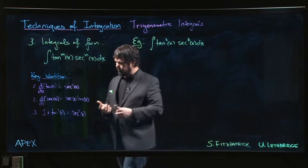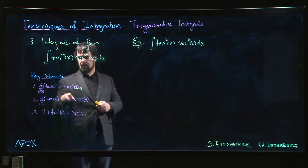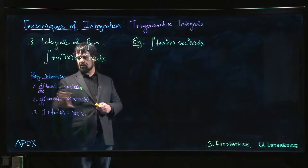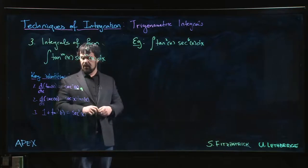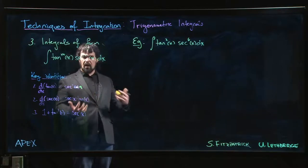But what we do rely on is that we have these relationships among the derivatives of tangent and secant. The derivative of tangent is secant squared. The derivative of secant, secant times tan. And so you sort of rely on that.